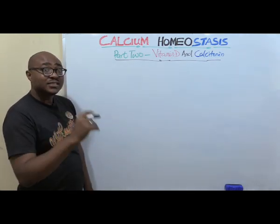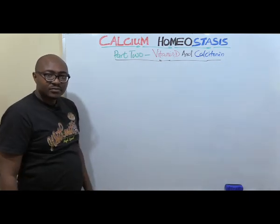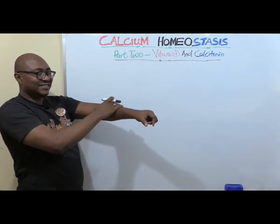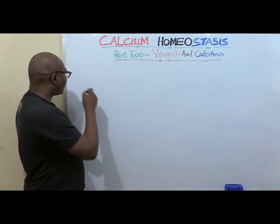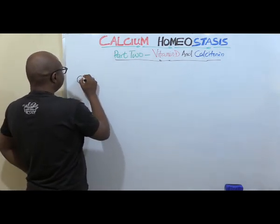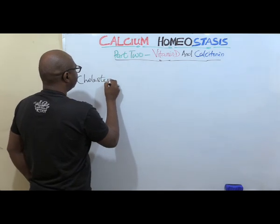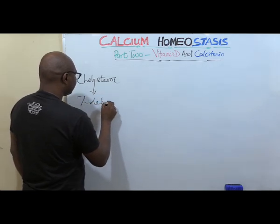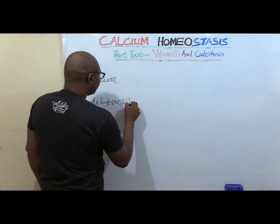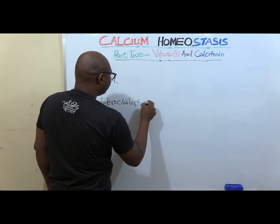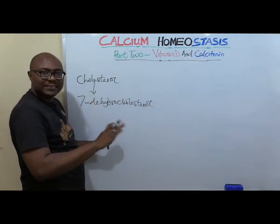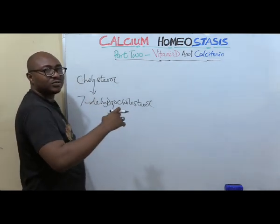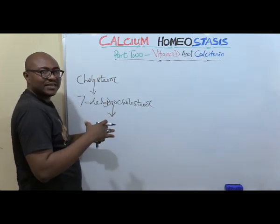The action of ultraviolet rays touching the skin begins to convert cholesterol — whose real name is 7-dehydrocholesterol — from under the skin, and converts it to vitamin D, which is known as cholecalciferol. That's the animal type of vitamin D that we use.